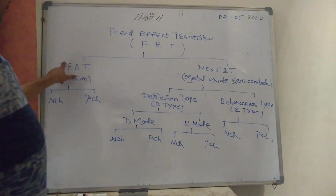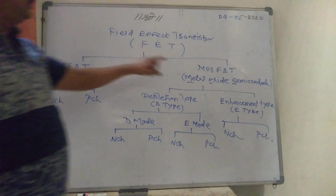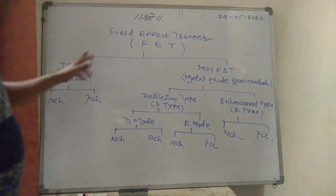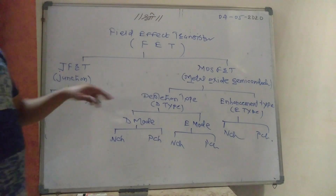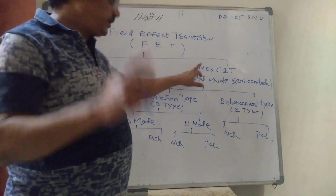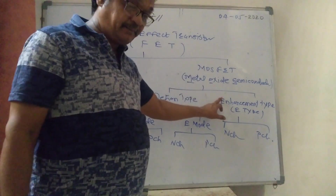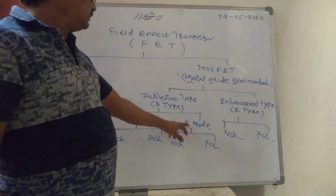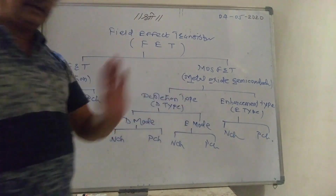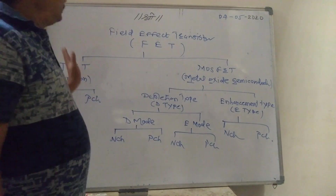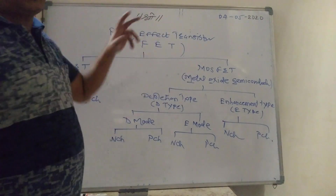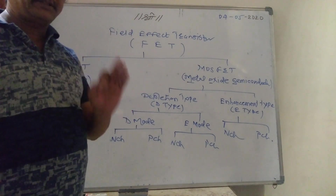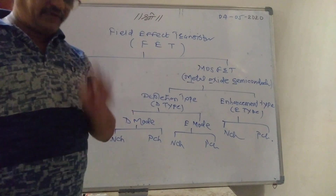FET has two types: JFET and MOSFET. JFET has N Channel and P Channel. MOSFET has Depletion-type and Enhancement-type. Depletion-type operates in Depletion-mode and Enhancement-mode, each with N Channel and P Channel. So this is about the fourth unit. For each entity, we have to study its construction, working, and VI characteristics.